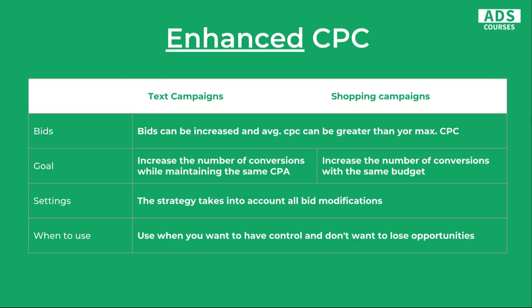You should use Enhanced CPC when you want to have control and don't want to lose opportunities. For example, if you tested the Target CPA strategy and the results were not as you expected and you want to have control in your campaigns rather than full automation, you should use Enhanced CPC. Or if you have a fresh new account without any conversion history, you will start with Enhanced CPC. I highly recommend using Enhanced CPC rather than only manual CPC.